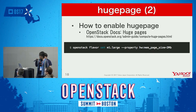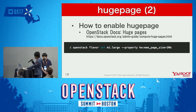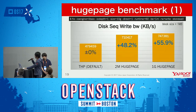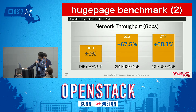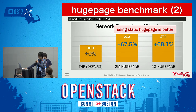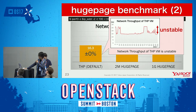Please see the OpenStack documentation for how to use huge pages. Looking at the benchmark results, for sequential write, performance is better using static huge pages. For network throughput, it is also better using huge pages with static configuration. We also found that network throughput is unstable when using transparent huge pages.